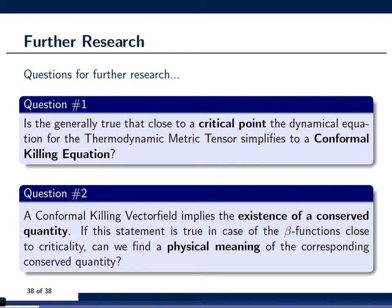So, a question that we are asking at the moment is can we find a physical meaning of this conserved quantity that seems to exist in the vicinity of the critical point of the model? And another question that we ask is is it generically true that close to the critical point this dynamical equation simplifies to the conformal killing equation? So, in a sense, this is the generic criteria to detect phase transitions.